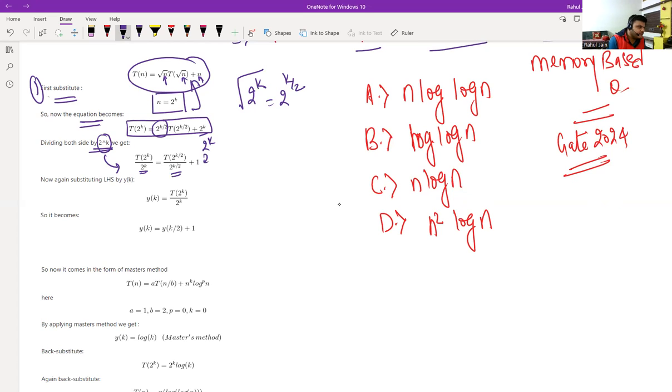Again, we are substituting LHS by y_k. So we are putting it like y_k equals T(2 to the power k) divided by 2 to the power k. And our equation on the left hand side becomes y_k equals y_k by 2 plus 1, k by 2 plus 1. We have just substituted what we have substituted. We substituted y_k on the left hand side. So you can simply see that y_k equals 2T(2 to the power k) divided by 2 to the power k plus 1.